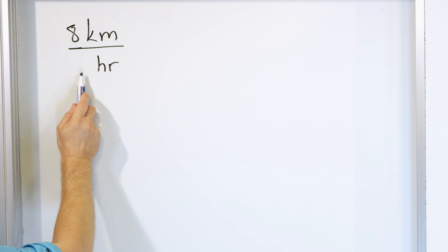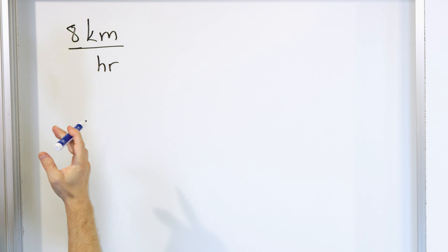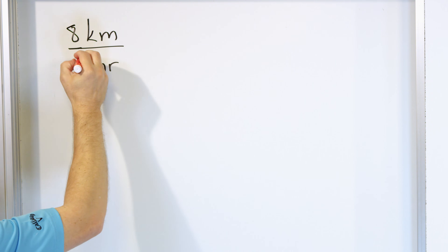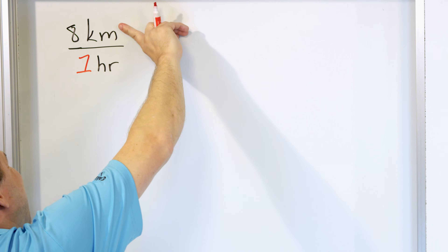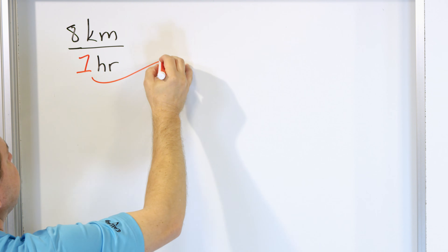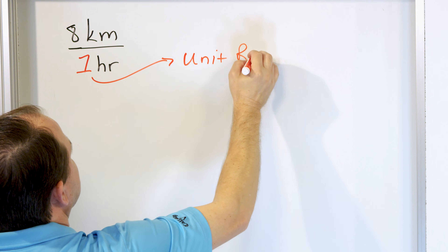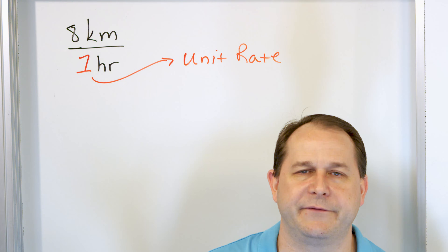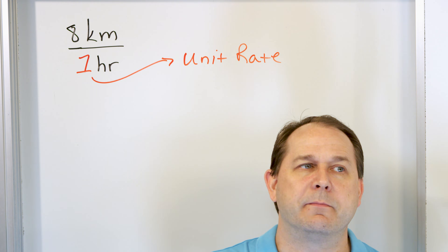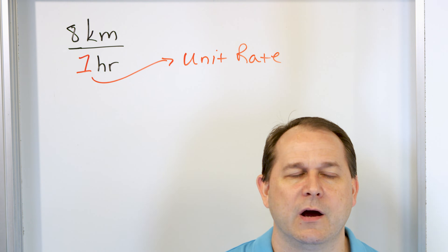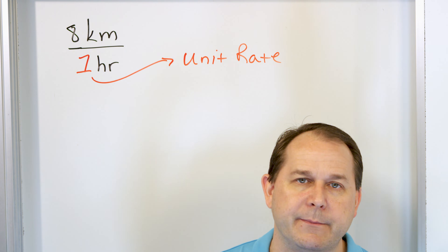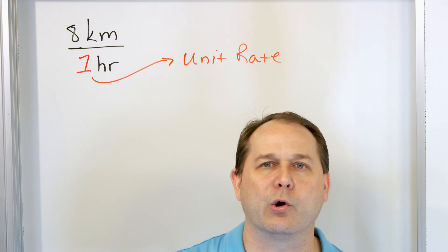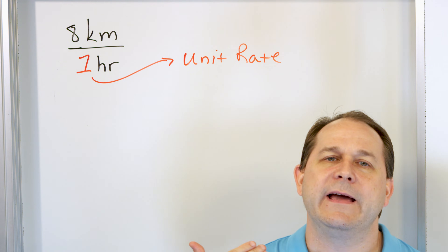So even though I haven't written it down here, when I write the unit kilometers per hour, what you're really saying is kilometers per one hour. And because it's whatever is happening per one of something, we call this a unit rate. When we have miles per second, that's miles per every one second. The bottom is always compared to one hour, one second, one minute, one year. It's called a unit rate.